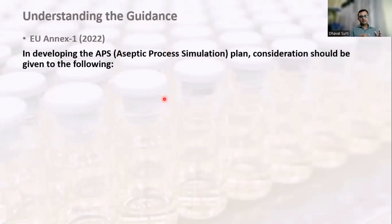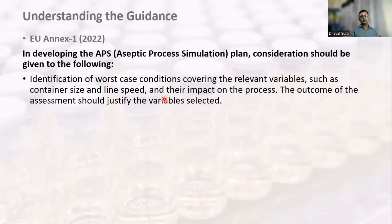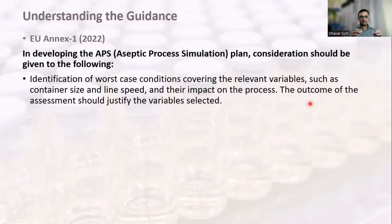EU Annex 1 further states that in developing the aseptic process simulation plan, consideration should be given to identification of the worst case conditions covering the relevant variables, such as container size and line speed, and their impact on the process. The outcome of the assessment should justify the variables selected, and a risk assessment or impact assessment document should support the approach. This should be documented in the validation master plan and relevant SOPs.